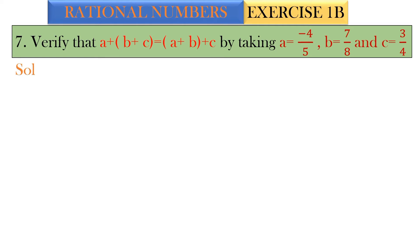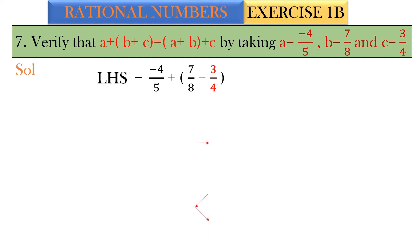A, B, C values are given. Replace the values in the equation on the left side and right side and verify they are equal. So for the left-hand side, apply the values: minus 4 by 5 plus (7 by 8 plus 3 by 4). The denominators are different, so we cross multiply.